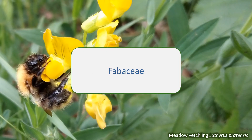Today we're going to look at the Fabaceae, also known by the older name of Leguminosae. This is the pea family or legume family. Fabaceae is a large family — the third largest in the world — with around 19,500 species found almost worldwide.